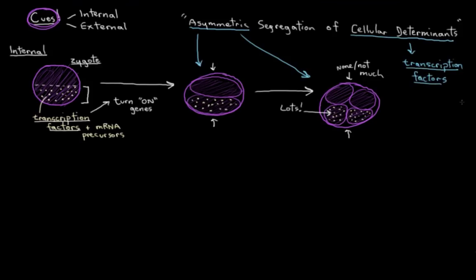So that's one way that cells can be made to specialize into different things, just having different transcription factors around.